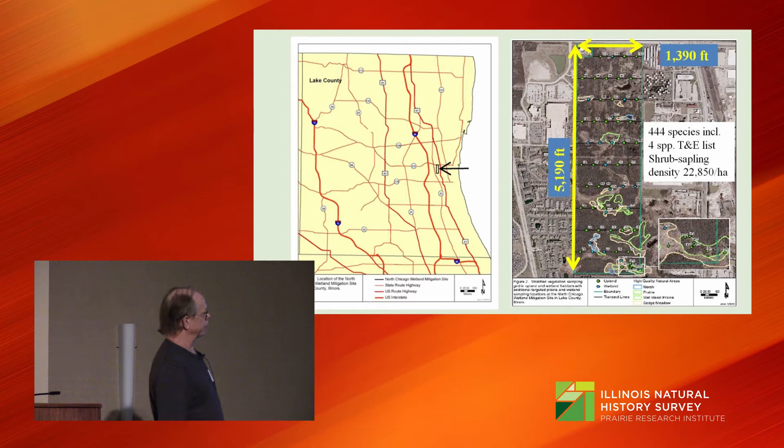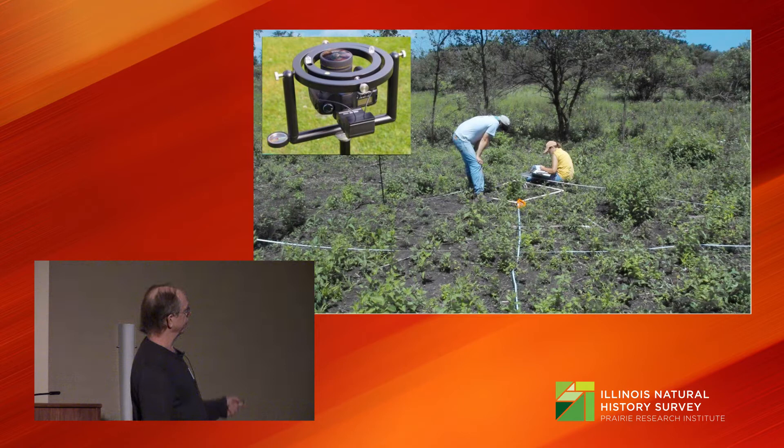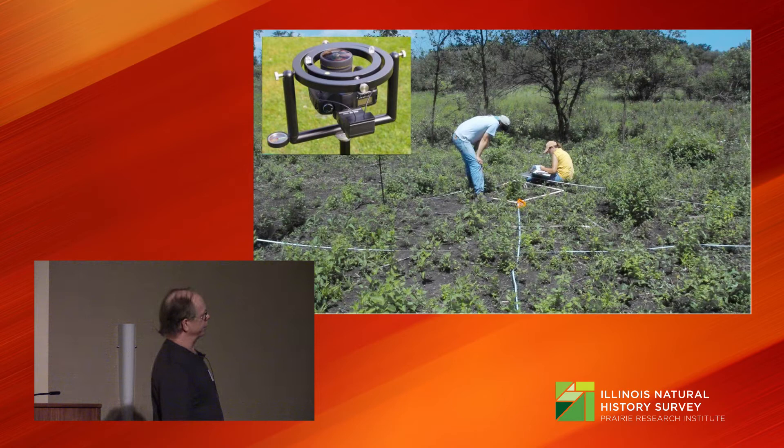So, a good place to test this is this North Chicago mediation site — a 160-acre mosaic of native grassland heavily infested by shrubs. I've established a network of stratified sampling plots across the site, within which we collect data on the woody overstory and the ground layer of vegetation in 25-meter-square plots. In the middle of each plot, we take a canopy photo with a hemispherical lens.